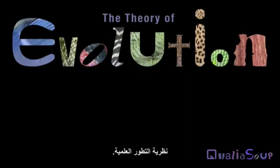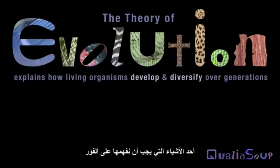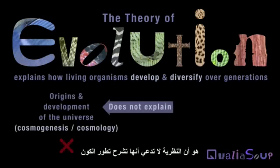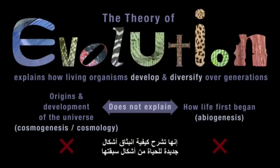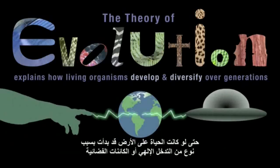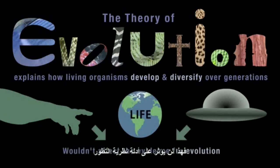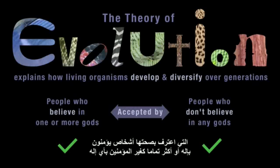The Scientific Theory of Evolution explains how lifeforms develop and diversify over generations. It doesn't claim to explain the development of the universe or how life was first begun — it explains how new varieties of lifeform emerge from earlier lifeforms. Even if life on earth had been initiated by some kind of divine or alien intervention, that wouldn't affect the evidence for evolution, which is accepted by people who believe in one or more gods as well as those who don't.